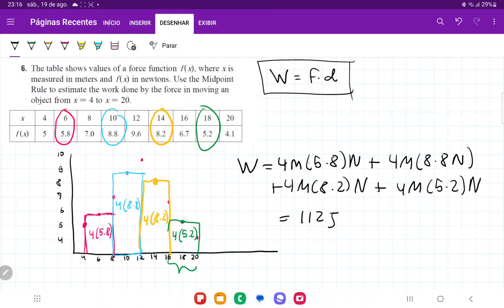All we did here was estimate total work by taking these midpoints, so the height of each midpoint gets extended out for an interval of 4. We just did force times distance over these intervals and calculated the total work.